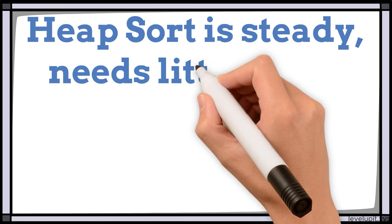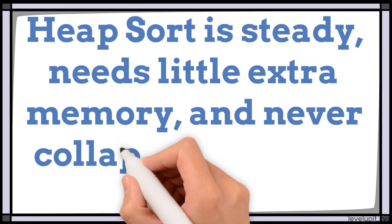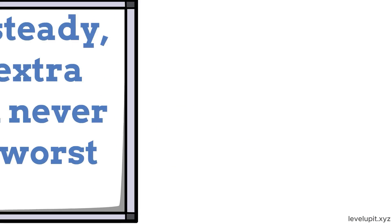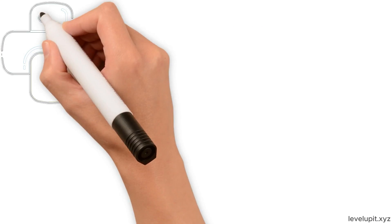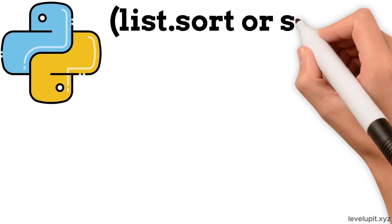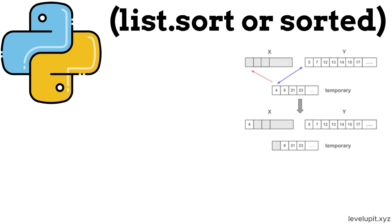Heapsort is steady, needs little extra memory, and never collapses on worst cases. In Python, the built-in sort, list.sort or sorted, uses TimSort, a hybrid that loves real-world data.